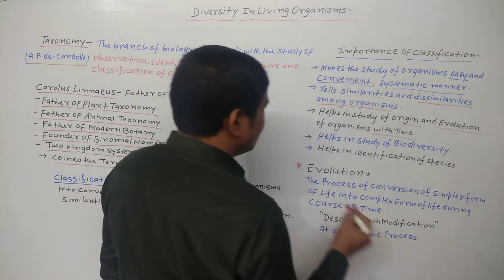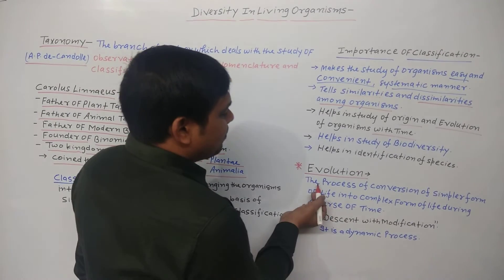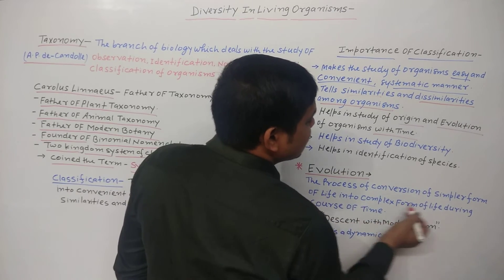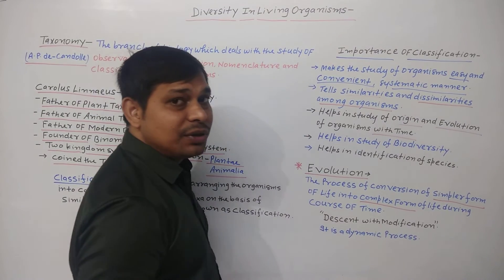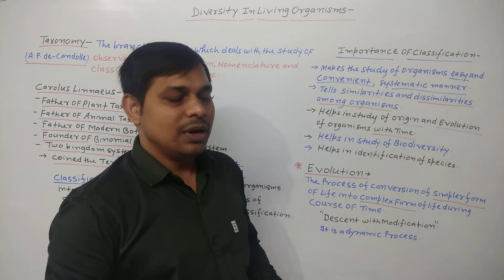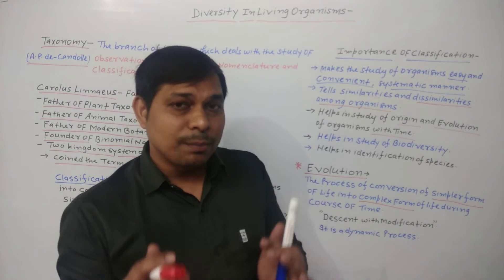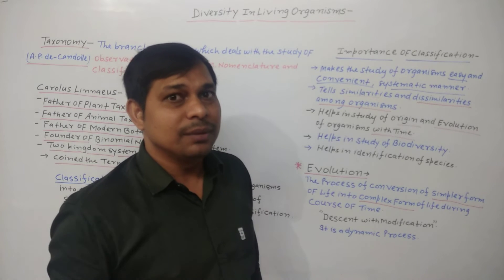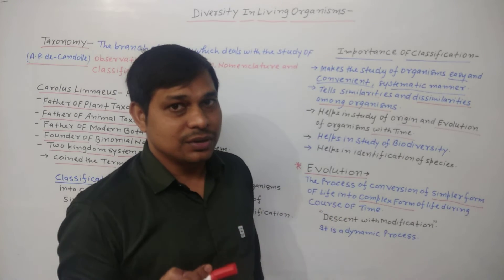Next we see Evolution. Evolution means the process of conversion of simpler forms of life into complex forms of life during the course of time. As time passes, simpler forms of life convert into complex forms of life — that process is called Evolution.